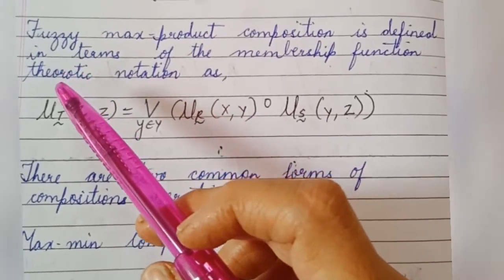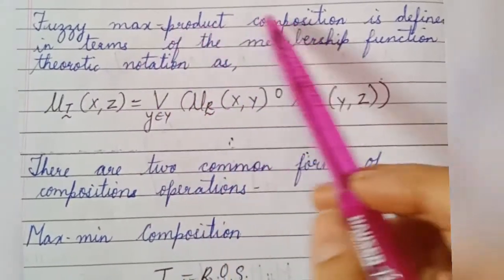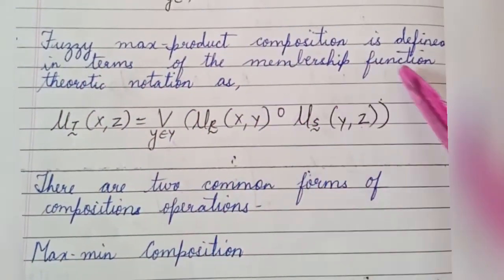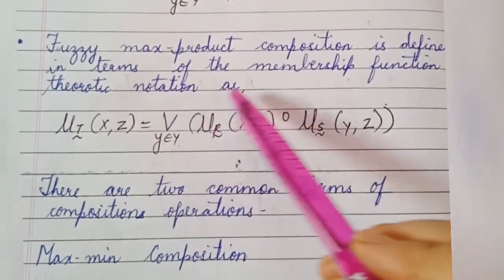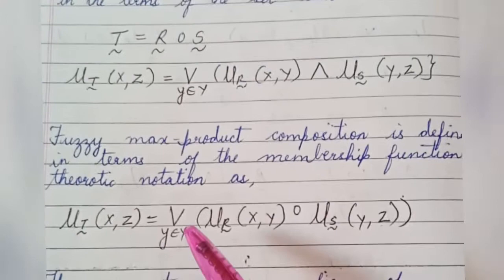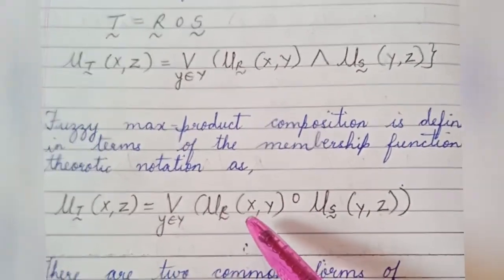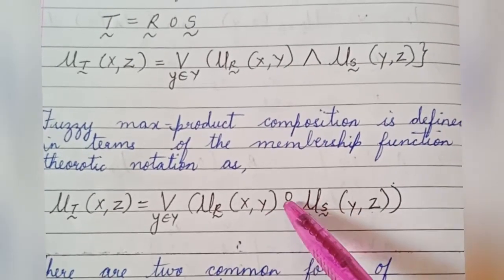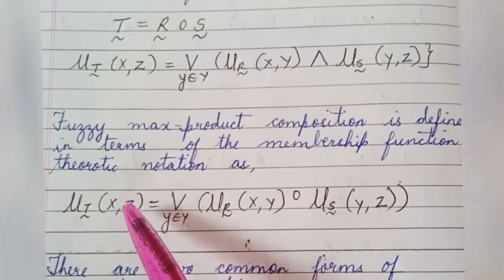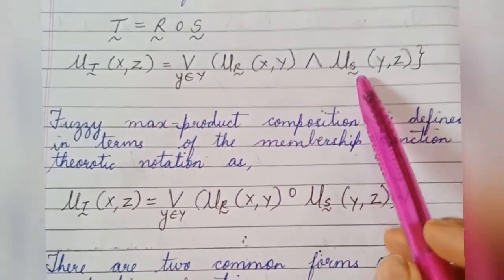The formal definition of max-product composition: Fuzzy max-product composition is defined in terms of membership function notation as mu_T(x, z) = max over y in Y of [mu_R(x, y) · mu_S(y, z)]. This is fuzzy max-product composition, compared to fuzzy max-min composition.